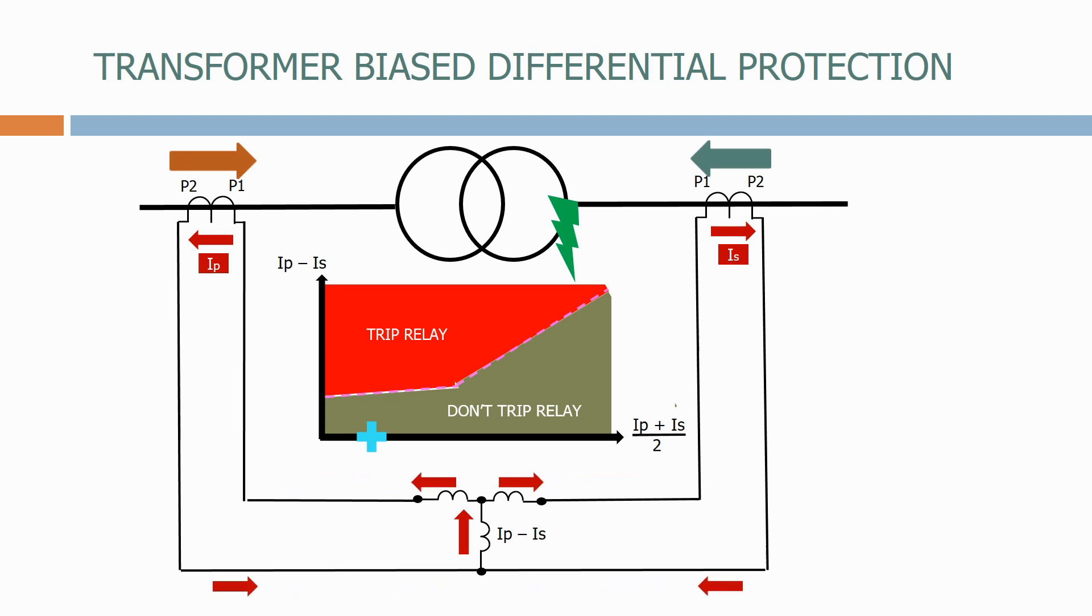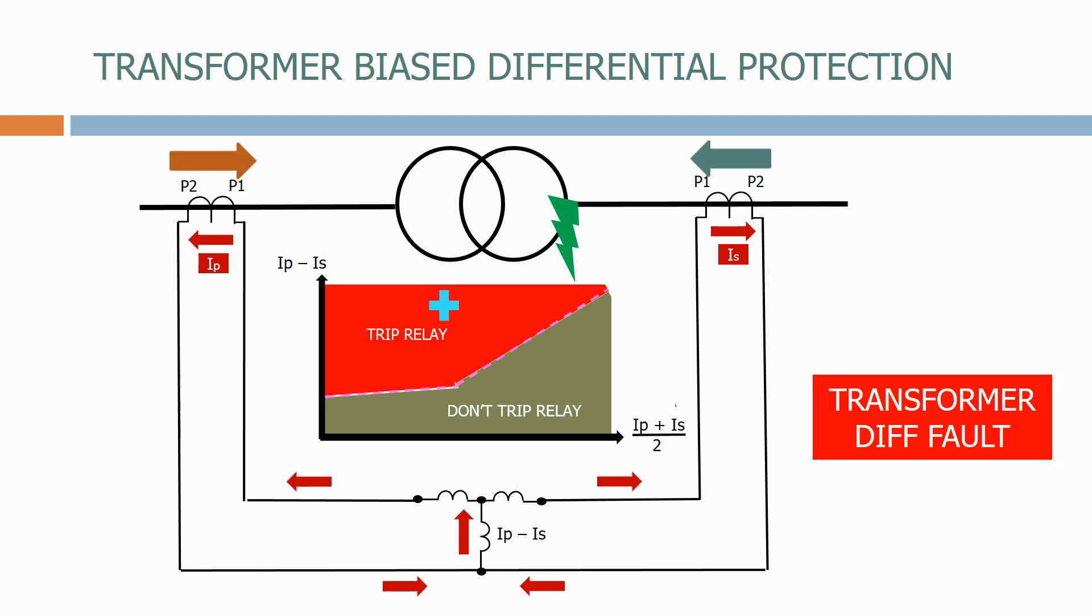the difference between the primary and secondary currents is now substantial. We quickly move into the trip zone, the relay operates and indicates a transformer differential fault.